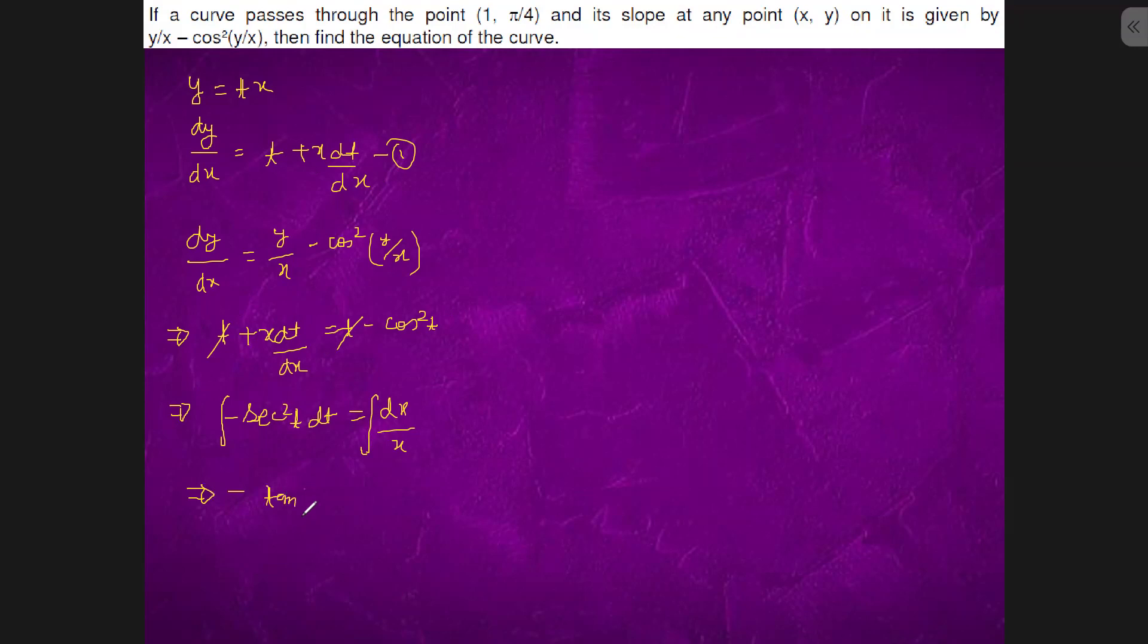Minus tan t is y by x equals to ln x plus c. Passes through one comma pi by four. So at pi by four it is minus one, this is zero, this is c is minus one.